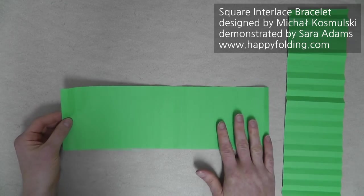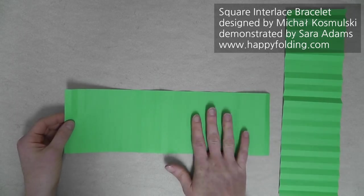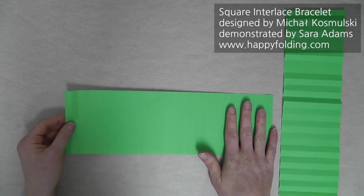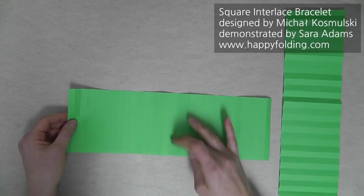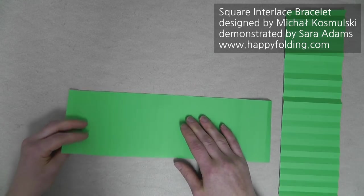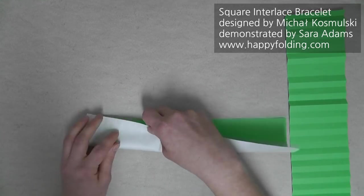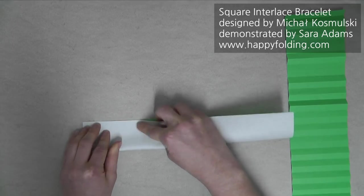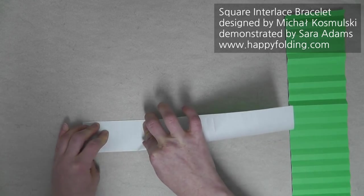Once you have your strip divided into 64, or if you've got two, divide it into 32, we now need to divide into 10 equal sections. For this, we're first going to fold in half lengthwise. Be sure to make this crease very precise,